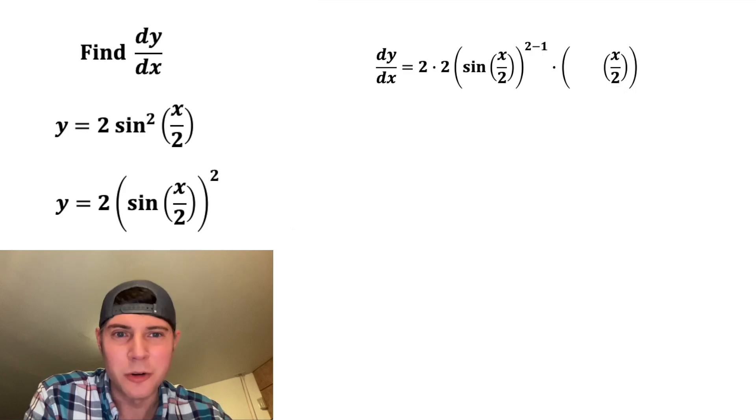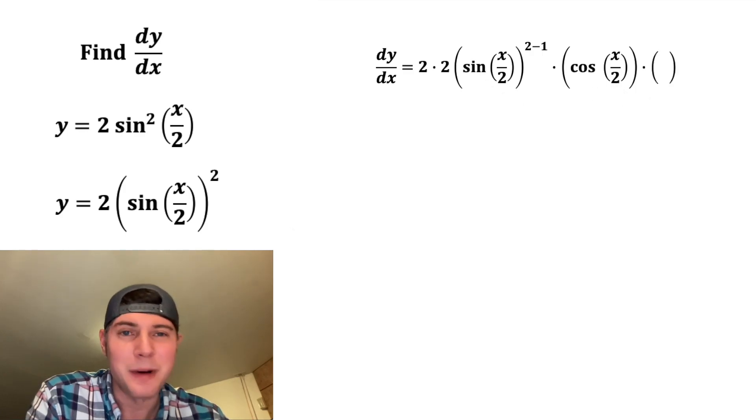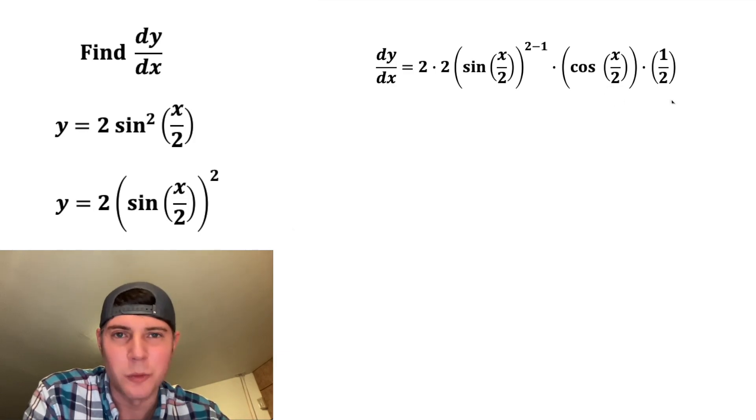For now, we're going to leave the x over 2 alone and the derivative of sine is equal to cosine. And then we're going to multiply all that by this derivative of x over 2. And the derivative of x over 2 is equal to 1 half.